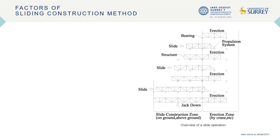The diagram on the right-hand side shows an overview of a slide operation. The first sector of a structure is erected on bearings and pushed ahead to a certain position. Then the adjacent sector is erected to the structure and jointed in many cases. The structure connected together is pushed ahead again.